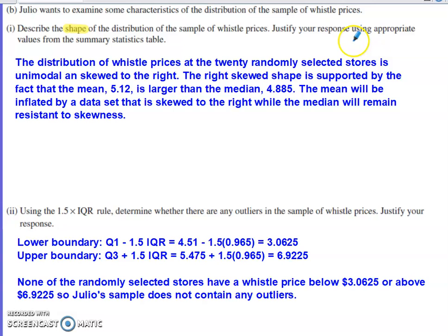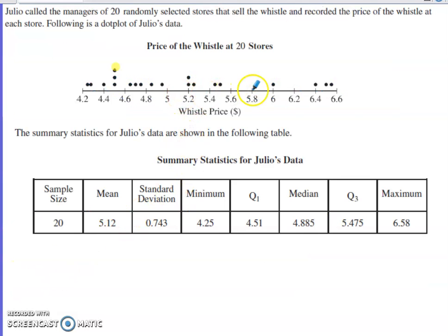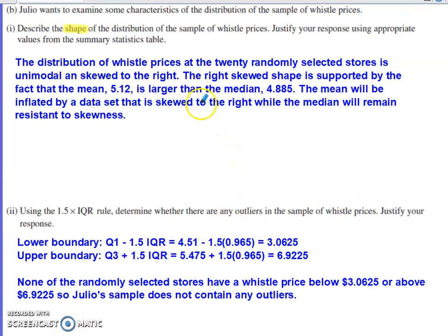It does go on to say justify your response by using appropriate values from the summary statistics table. If you have data that is skewed to the right, as this one is, the mean is going to be inflated due to all these values on the higher end of the data set. The median is going to stay resistant to that skewness. So, I used the values from the summary statistics. The right skewed shape is going to be supported by the fact that the mean is larger than the median. The mean is going to get inflated by that right skew, while the median will remain resistant to that skewness. So, that was my argument with the summary statistics as to why we had that right skew.